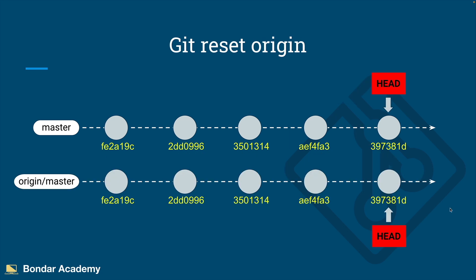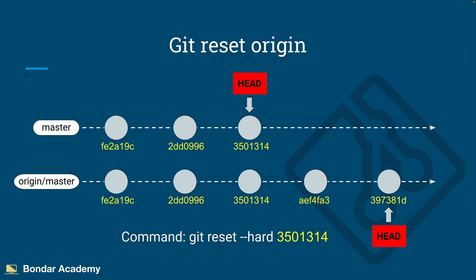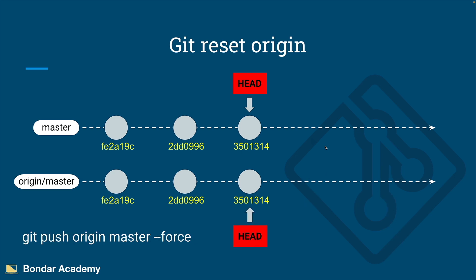When you work on a local branch there is no issue — you can easily move HEAD back and forth. But if you have synchronized your branch with the origin master branch and you reset HEAD to an earlier commit, unfortunately you cannot do the same thing on the origin master branch. The only way to reset the origin branch is to execute git push origin master --force, which is highly unrecommended, especially on the master branch. You can safely perform this on your own branch and then create a pull request to master. In most projects the master branch is protected and force push is not allowed.